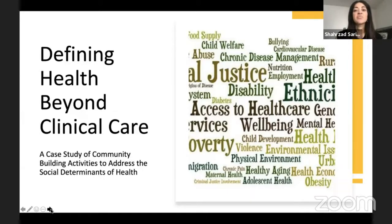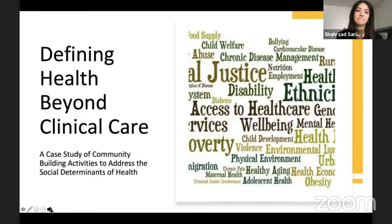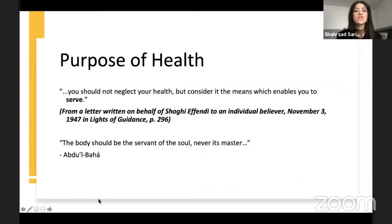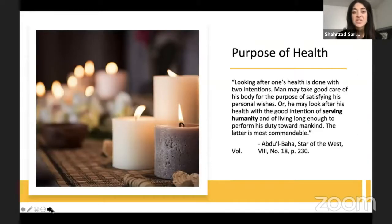In this session, we will briefly explore the definition of health and social determinants of health from a scientific and spiritual perspective. We will describe the role of the institute process and community building activities in addressing social determinants of health, and share an example of a case at a community health center. The Baha'i writings state that the purpose of health is to serve — the body should be the servant of the soul, never its master. One intention for health can be to satisfy personal wishes, or another can be serving humanity, and the latter is more commendable.